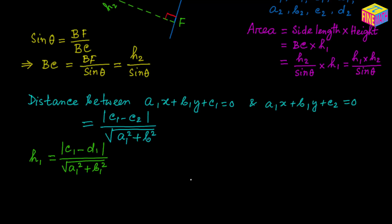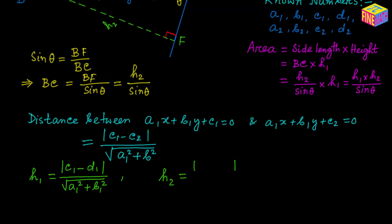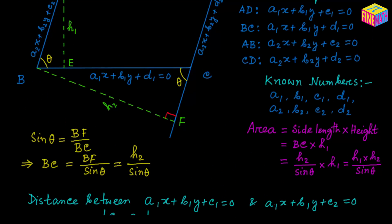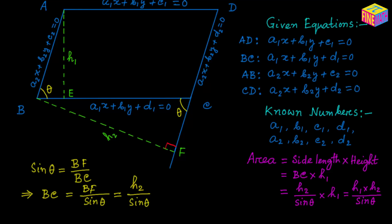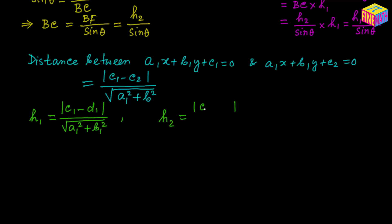Now let's calculate H₂. For H₂ we can say it equals the modulus of the difference of the two constant terms of the parallel lines AB and CD, which have constant terms C₂ and D₂, with coefficients A₂ and B₂. So H₂ equals the modulus of C₂ minus D₂ over the square root of A₂² plus B₂².